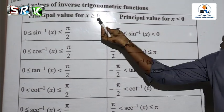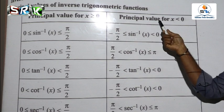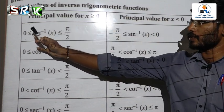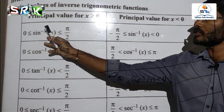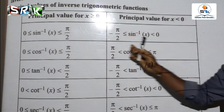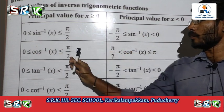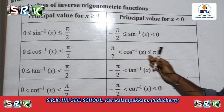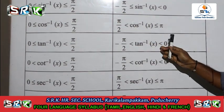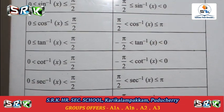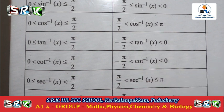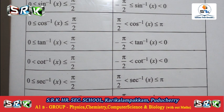Principal value: for x greater than or equal to 0, and for x less than 0 — two conditions. For x ≥ 0: sin⁻¹(x) lies in [0, π/2]; cos⁻¹(x) lies in [0, π/2]; tan⁻¹(x) lies in [0, π/2]. For x < 0: sin⁻¹(x) lies in [-π/2, 0]; similarly for cosecant inverse and secant inverse.